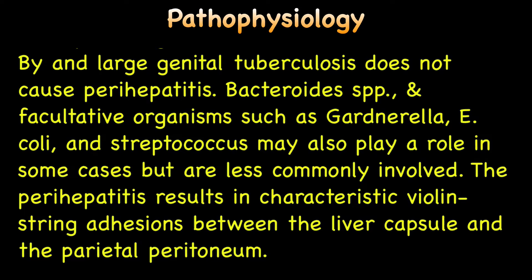The perihepatitis results in characteristic violin string adhesions between Glisson's capsule of the liver and the parietal peritoneum.